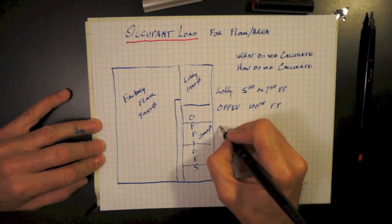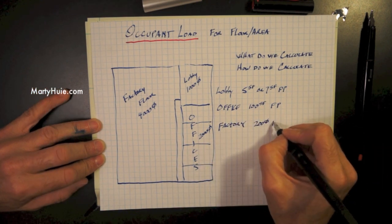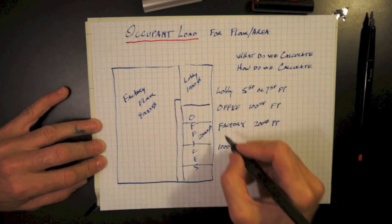Office space falls under business, and that's 100 square feet per person. And the factory floor falls under manufacturing or assembly, and that's 200 square feet per person.